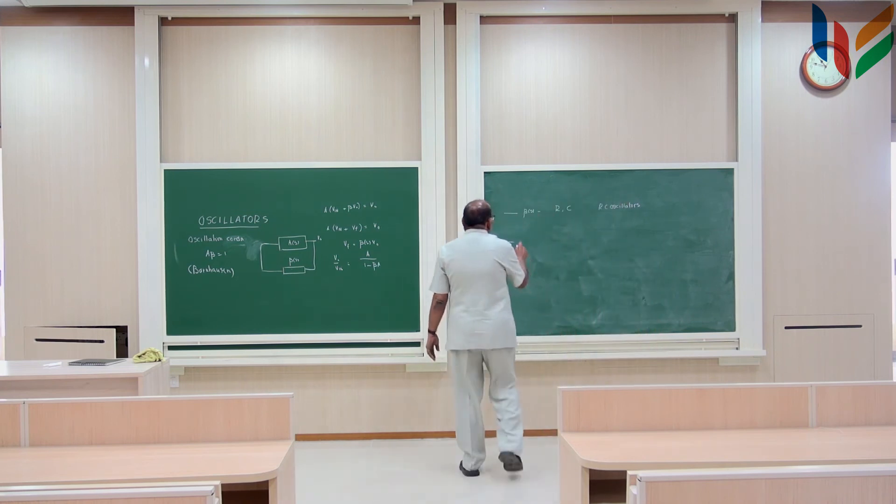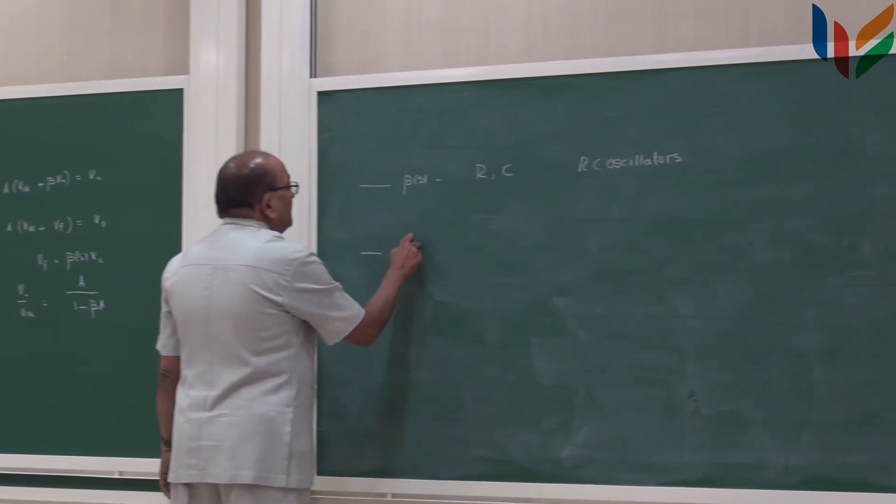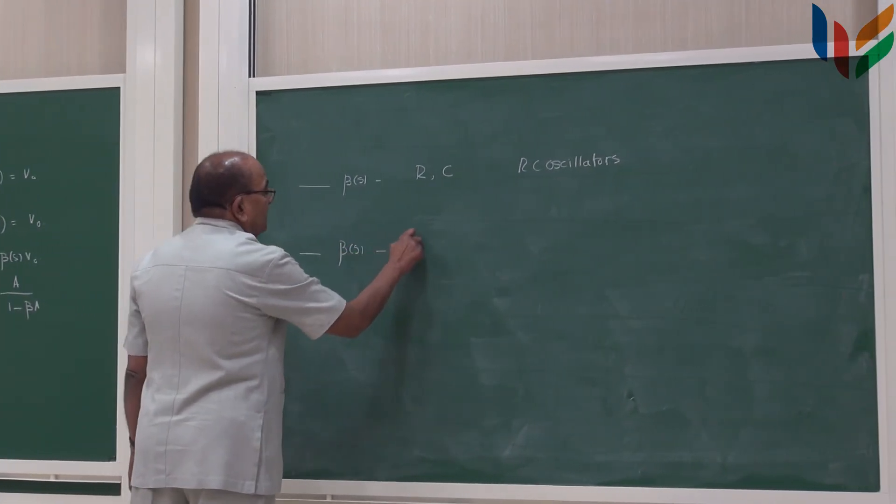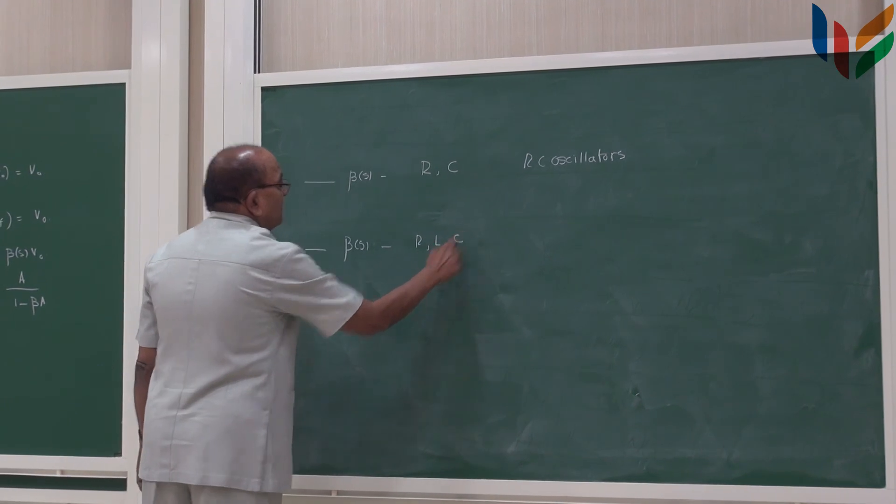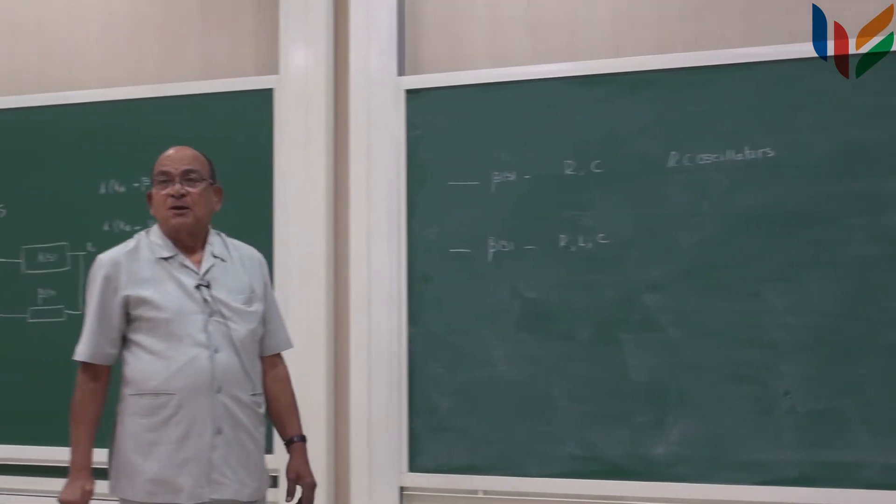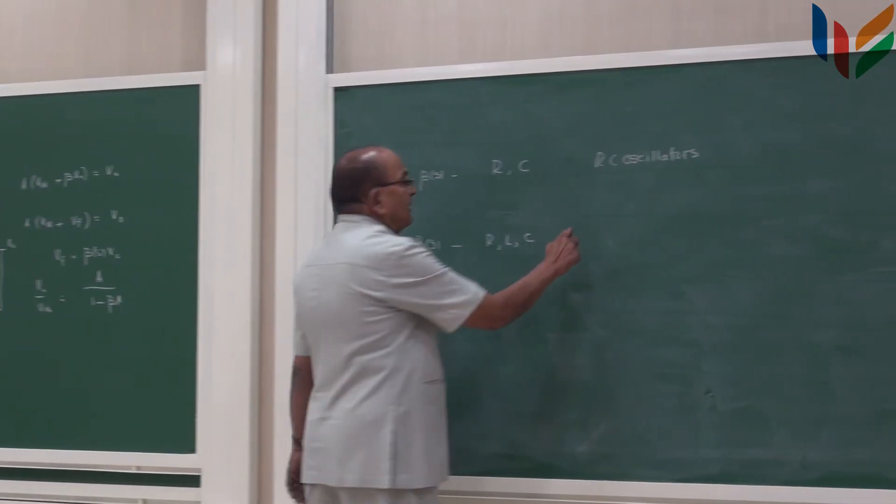If beta s consists of resistors, inductors and capacitors, such oscillators are normally called LC oscillators.